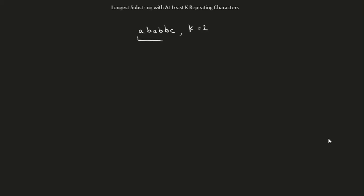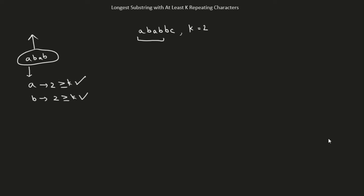Let's take this as our substring: A, B, A, B. It has two unique characters. A occurs twice, which is greater than or equal to k. And B occurs twice, which is also greater than or equal to k. So the length of this substring is 4.